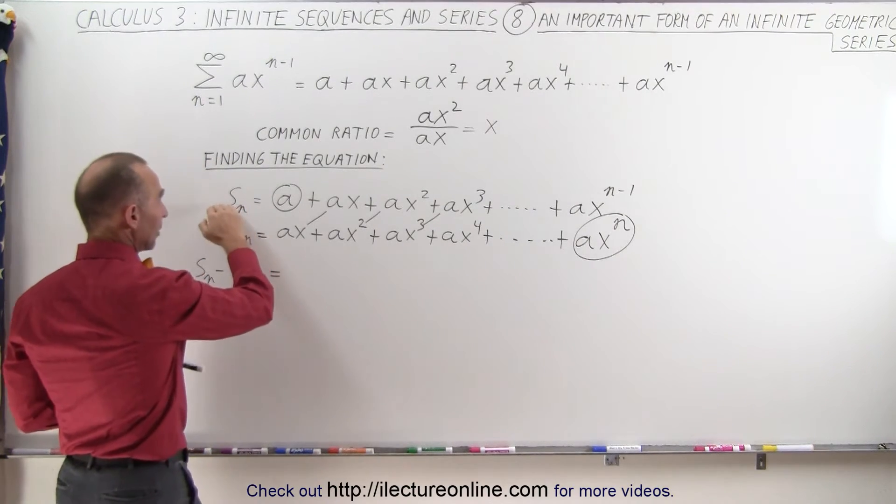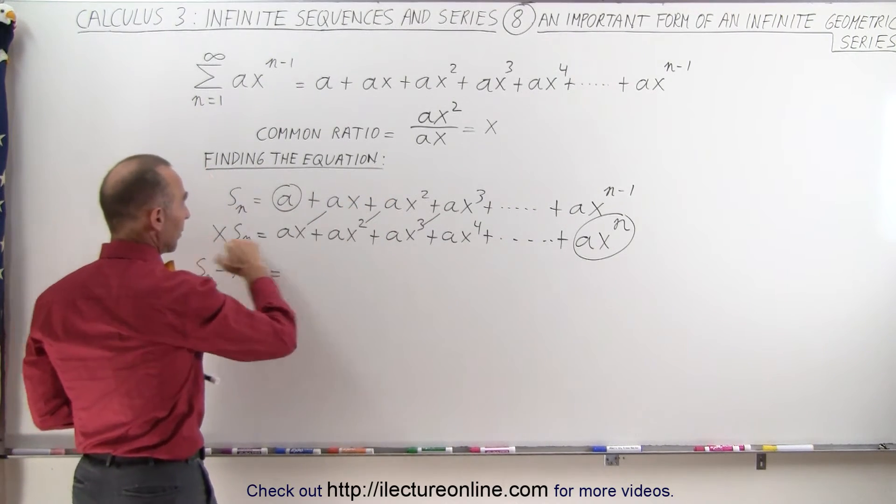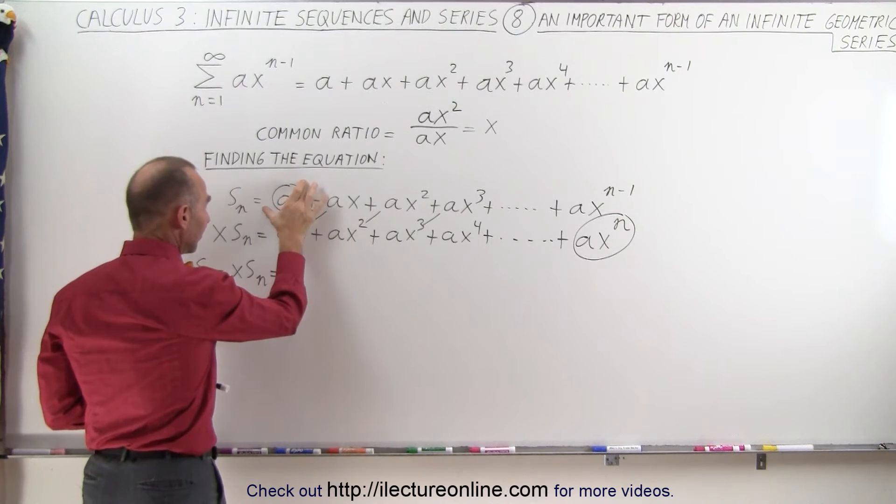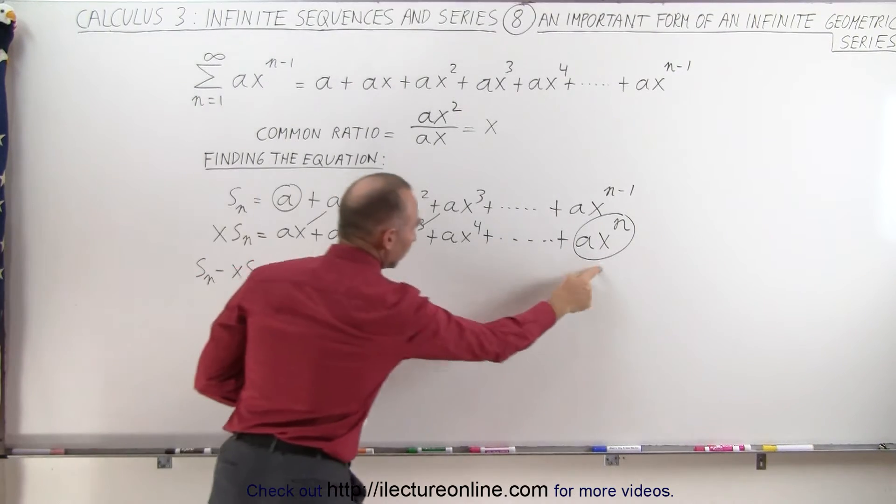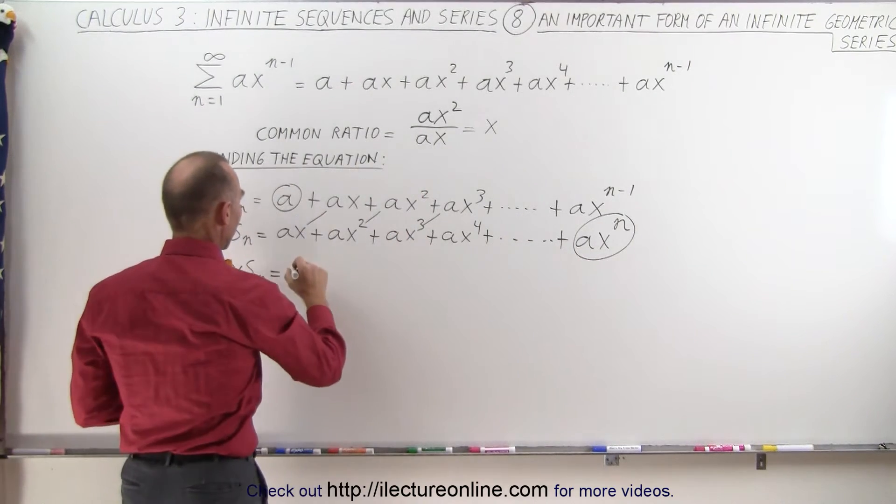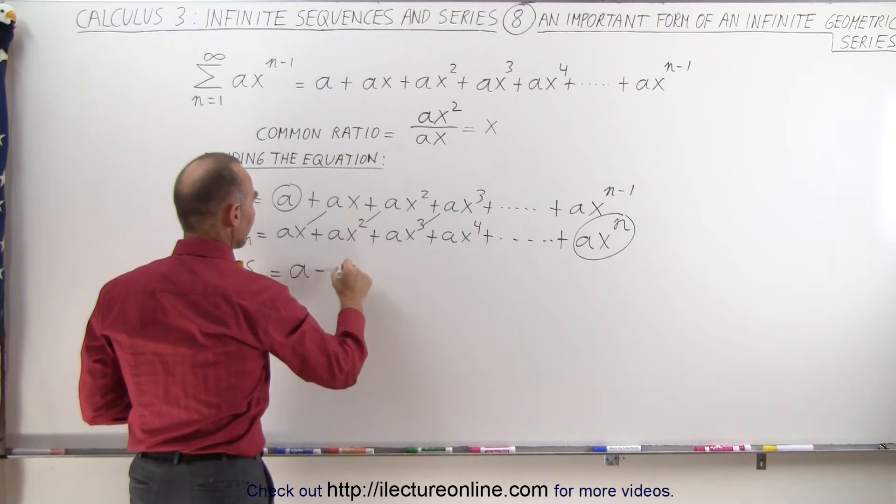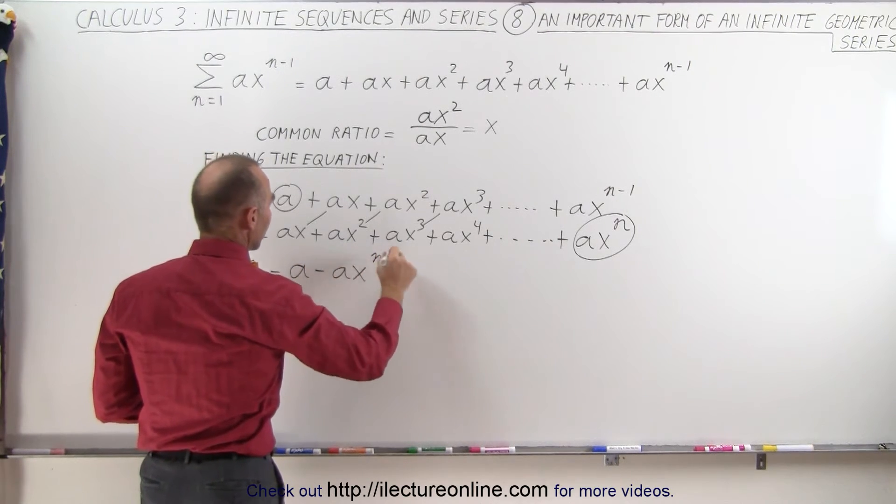What I get is I take the top series and subtract the bottom series, so I end up with this minus this term, those are the two that are not common, I get a minus a times x to the n power.